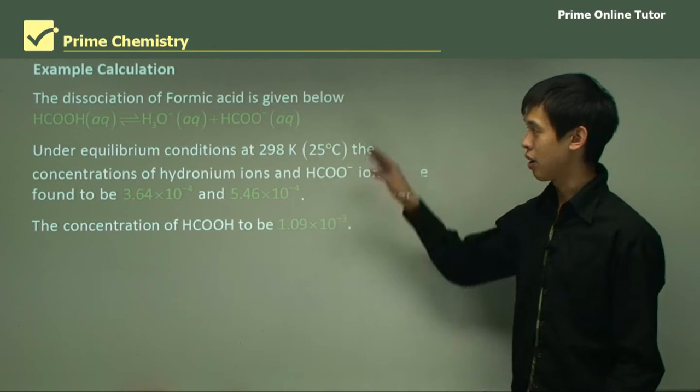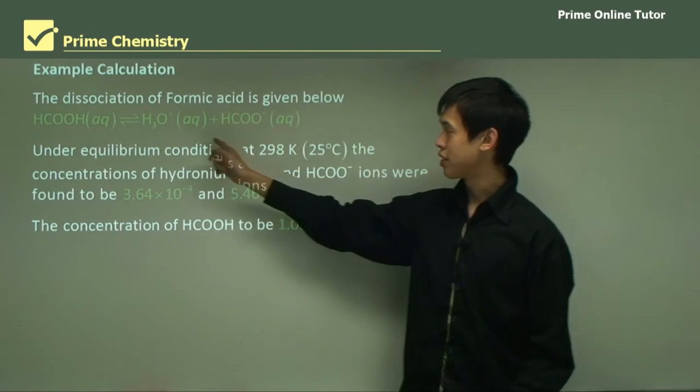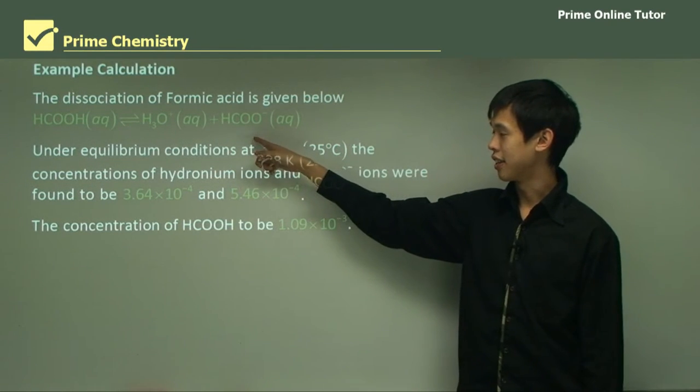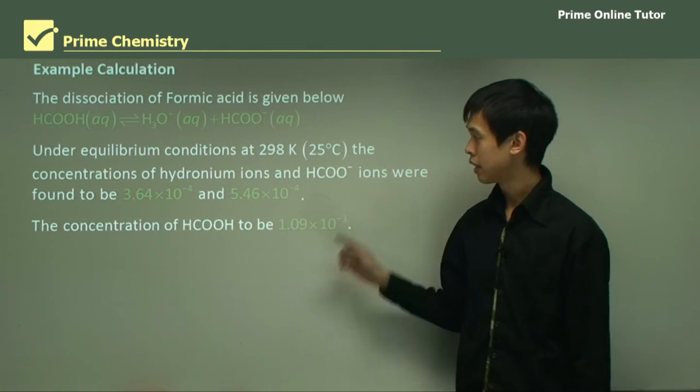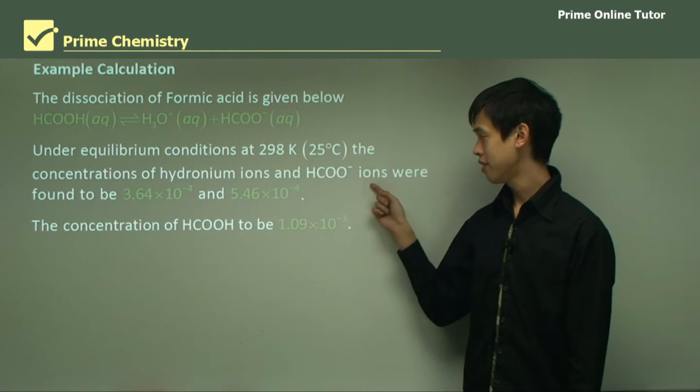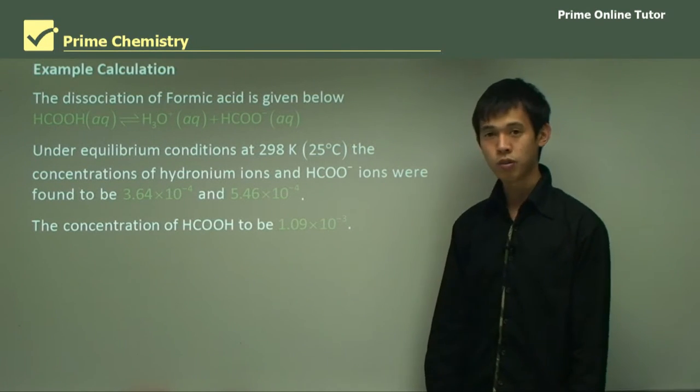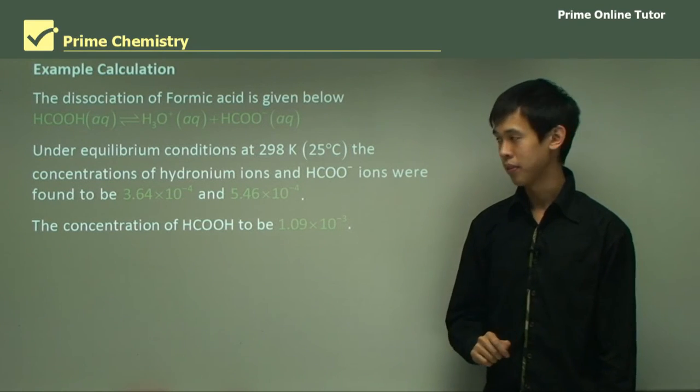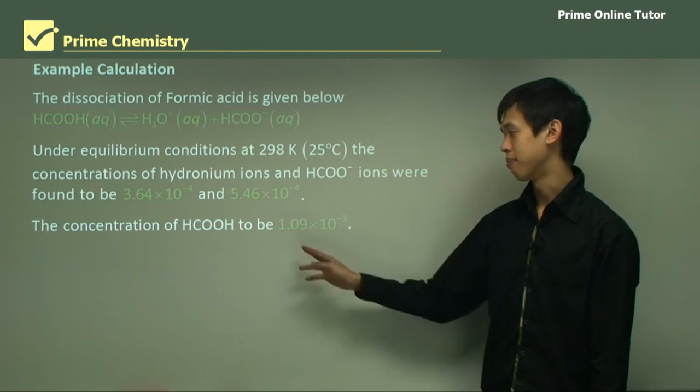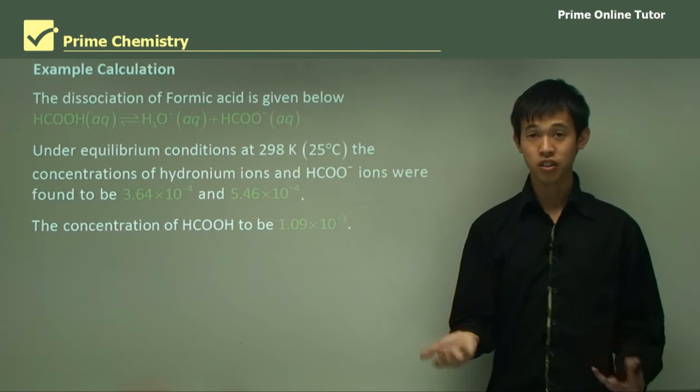So let's do an example calculation. I'll work through this one with you and hopefully you'll see how it works. So we have formic acid and we have it dissociating to give us H3O and the formate ion. Now under equilibrium conditions at 298 degrees Kelvin, the concentration of hydronium ions and HCOO- ions are 3.64 times 10 to the minus 4 and 5.46 times 10 to the minus 4. Now the concentration of formic acid at the start was 1.09 times 10 to the minus 3. Actually by equilibrium time it was this.